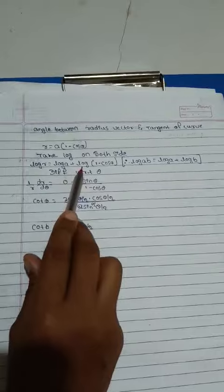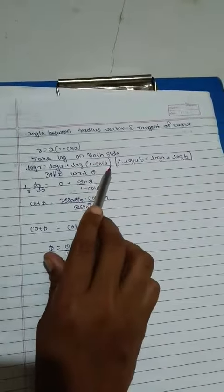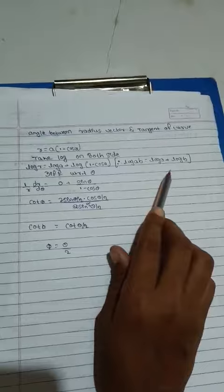Log r is equal to log a plus log 1 minus cos theta, because log a into b is equal to log a plus log b.